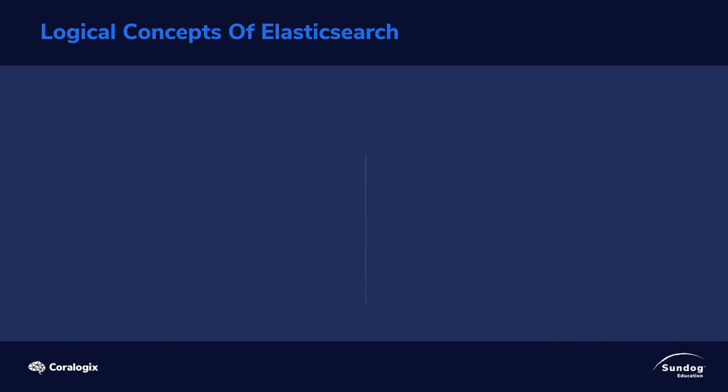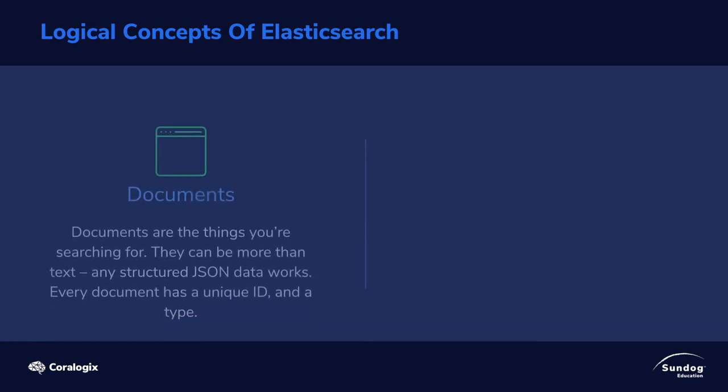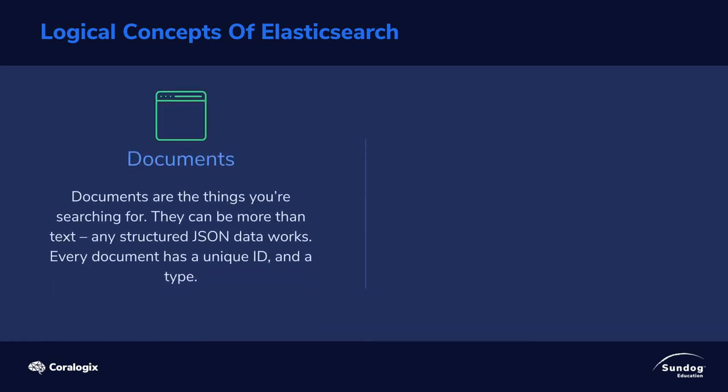There are two main logical concepts behind Elasticsearch. The first is the document. If you're used to thinking of things in terms of databases, a document is a lot like a row in a database that represents a given entity — something that you're searching for. Remember, in Elasticsearch it's not just about text; any structured data can work.